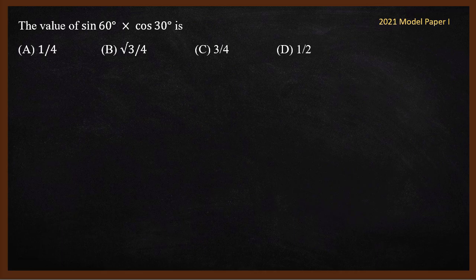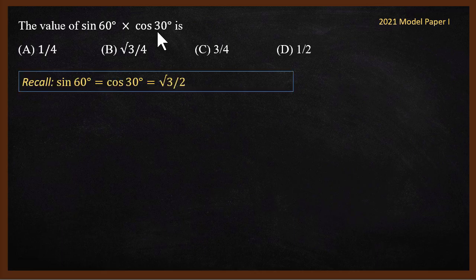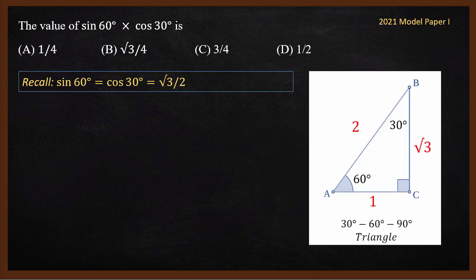Now we will use key angle values to solve these problems. From the 2021 model paper: sin 60° multiplied by cos 30° is what? To solve this we need to know that sin 60° equals cos 30° equals root 3 by 2.